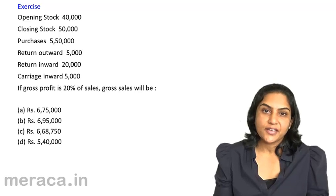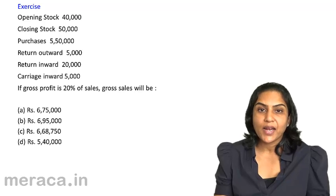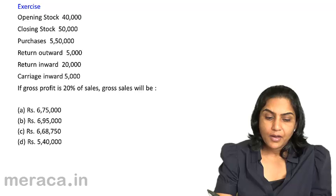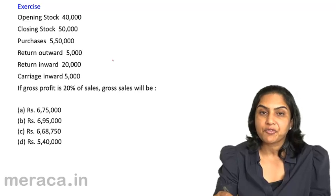Let us work out another exercise which combines both the GP margin as well as the equation. Opening stock 40,000, closing stock 50,000, purchases 5,50,000.